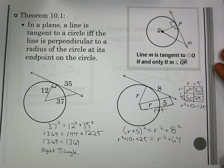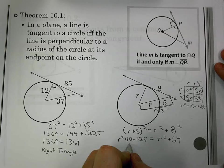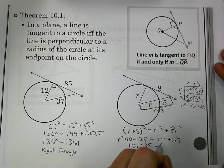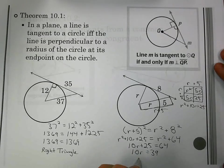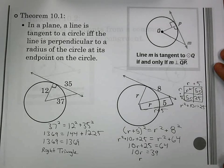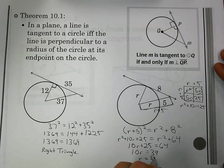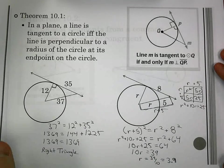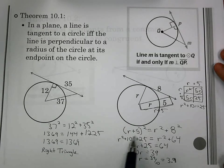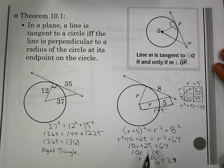And if you use FOIL, that would also work too. So from here now I can simplify. But I have an r squared on both sides, so I can subtract it from both sides. I have 10r plus 25 equals 64. That becomes 10r equals 39. I divide. I get 39 over 10, or 3.9. So our radius here would be 3.9 units. The key thing you're going to see there is where you have to square that r plus 5. You've got to be careful with that one.